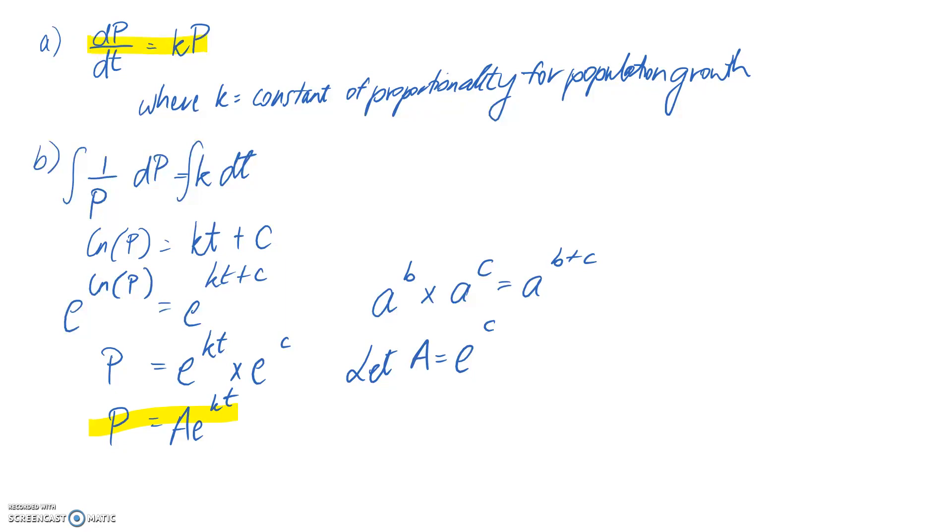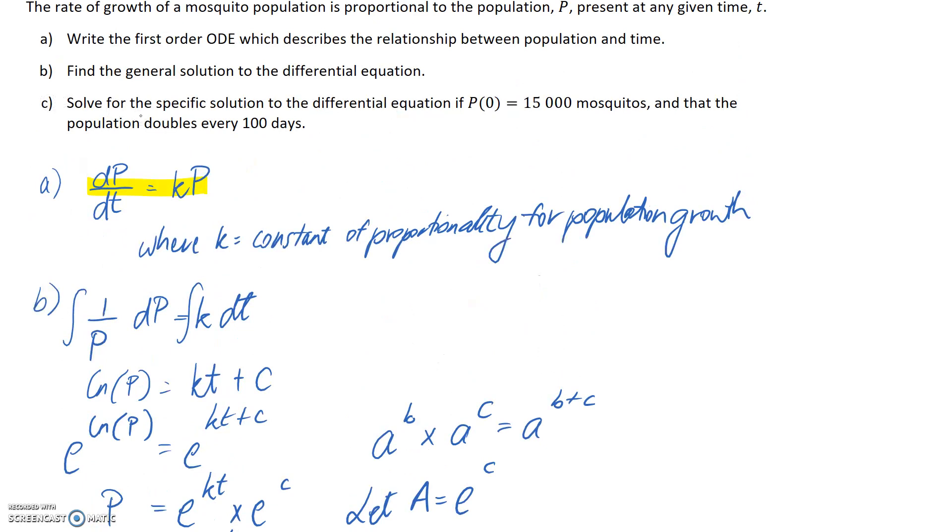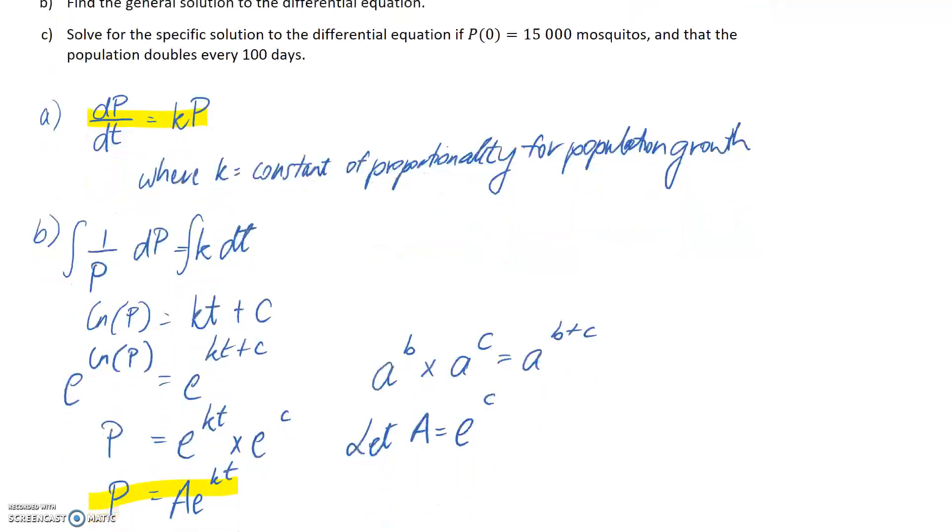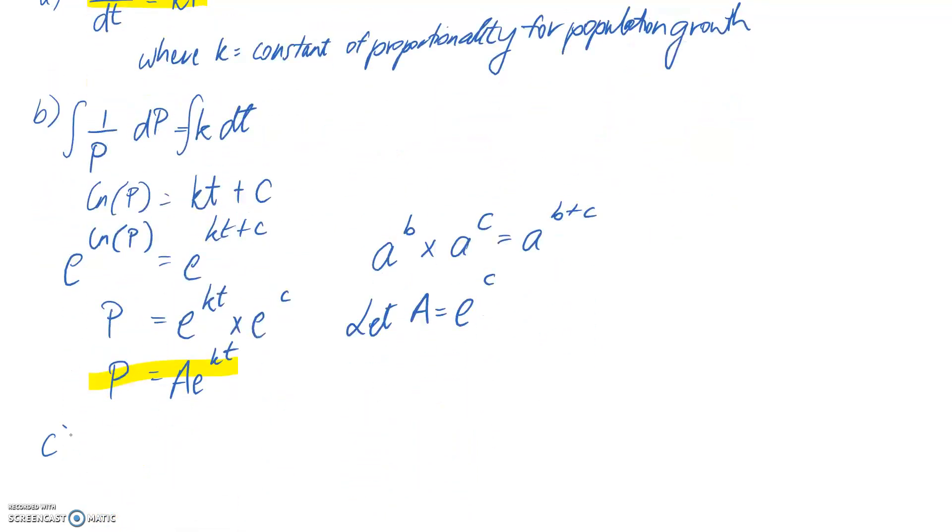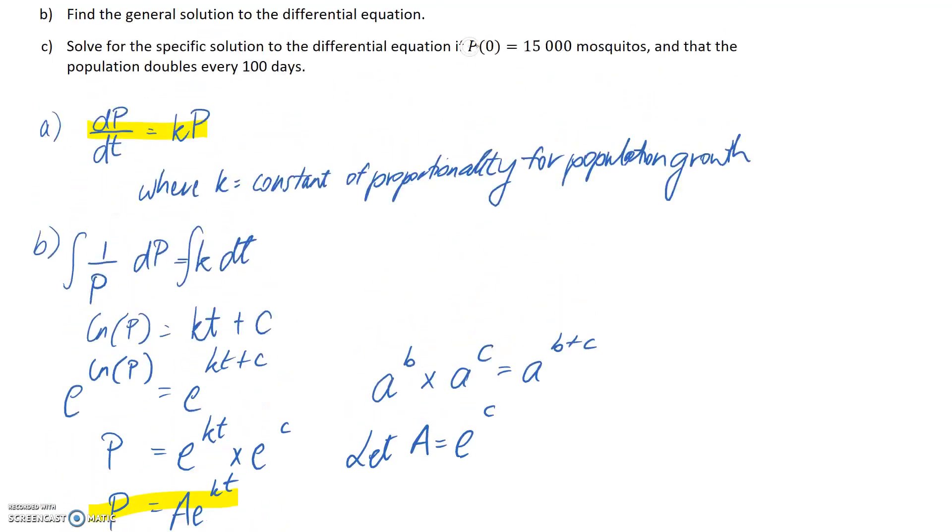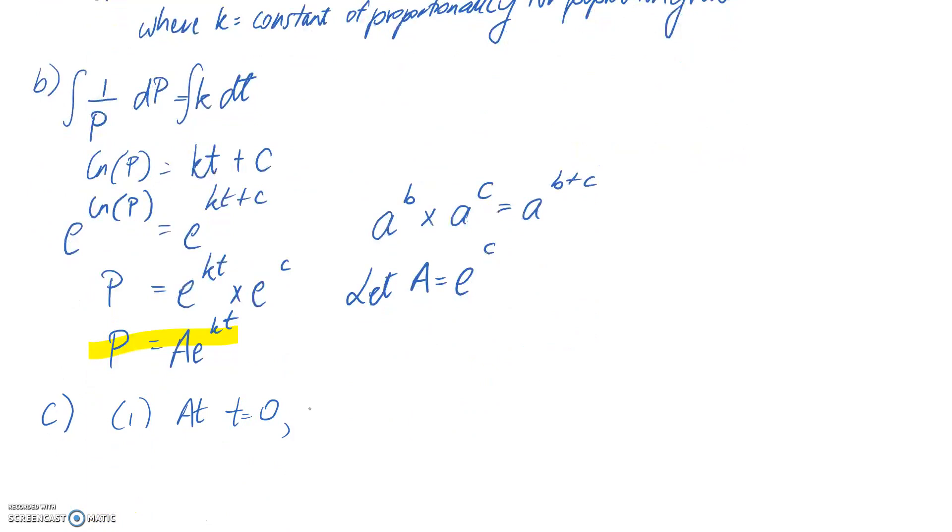In part c, we solve for the specific solution by figuring out the constants in the equation. We're given conditions: P(0) = 15,000, and the population doubles every 100 days. The first condition is an initial condition: at time t = 0, the population is 15,000.